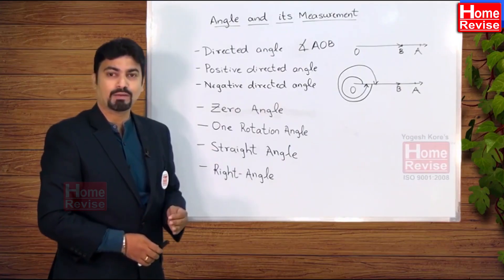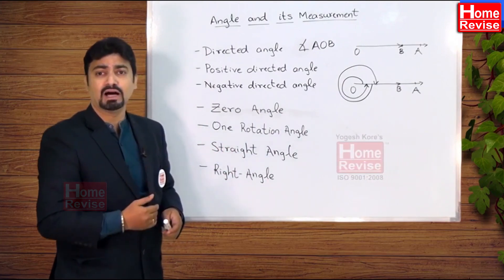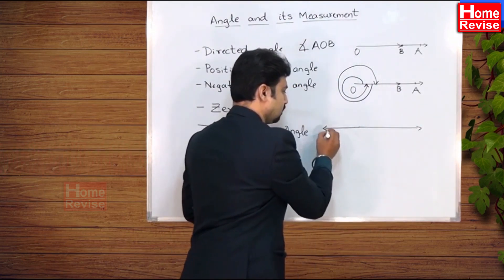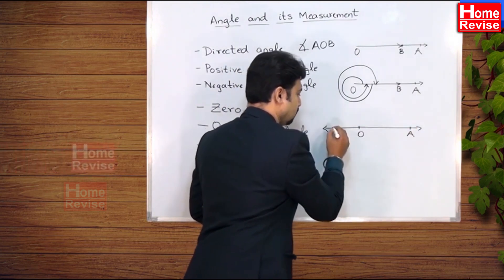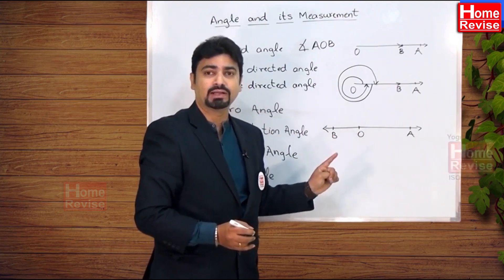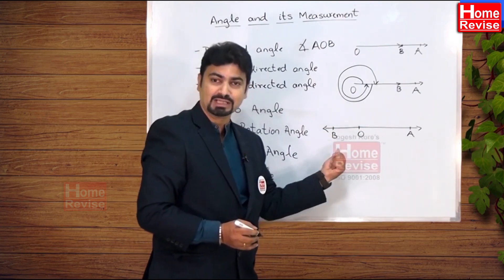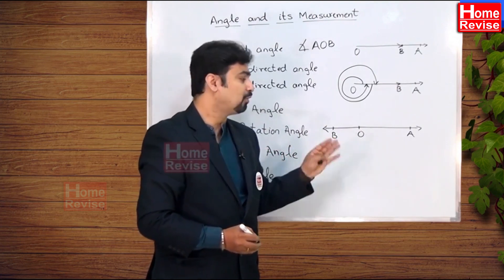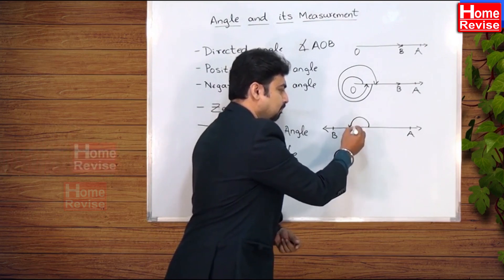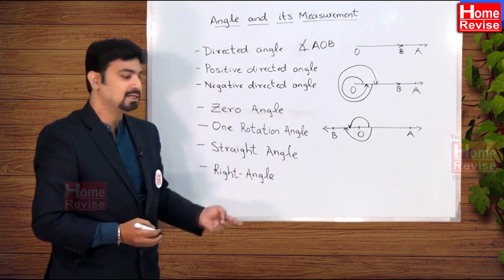The straight angle lies on a straight line, where the initial arm and the terminating arm are in opposite directions. Angle AOB here is actually a straight line and is known as a straight angle. This angle can be achieved by rotating the initial arm OA in the anticlockwise direction until it reaches the final position OB, or also by rotating OA in the clockwise direction until it reaches OB. This particular angle is known as a straight angle.